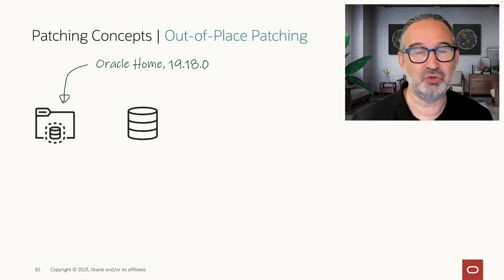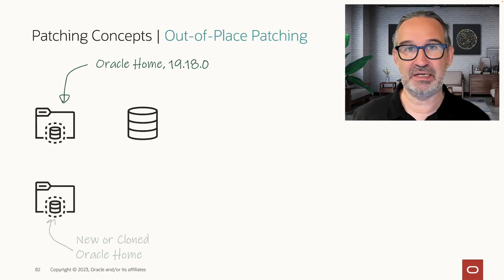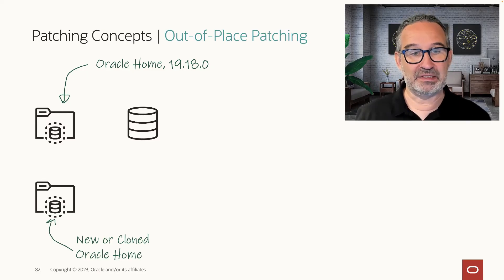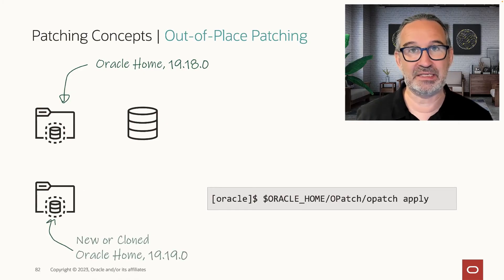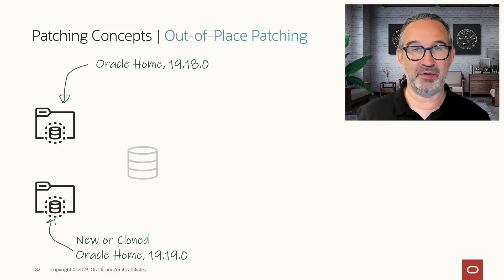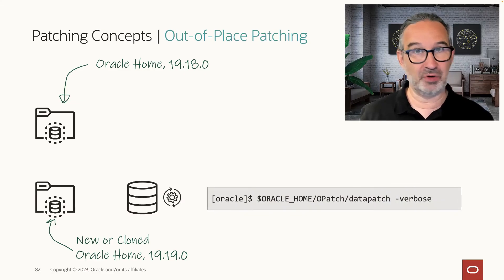Much better to do out-of-place patching. Out-of-place patching means I start again with 19.18, then I clone — or actually I prefer to have an absolutely fresh home — and install into that fresh home my most recent release update with opatch apply, which will be a 19.19 environment. And once this is there, I simply shut down my database, relocate my services and environment, and start up in the new 19.19 environment. And once the database and all PDBs are up, I run datapatch -verbose and it does everything for me.